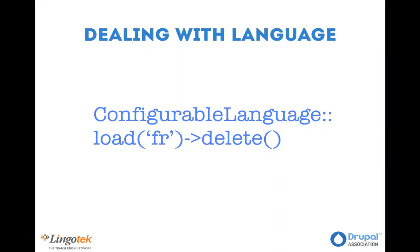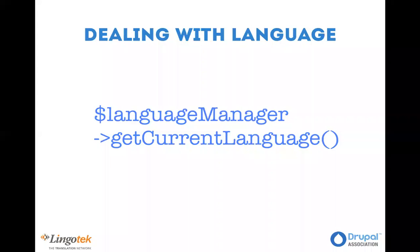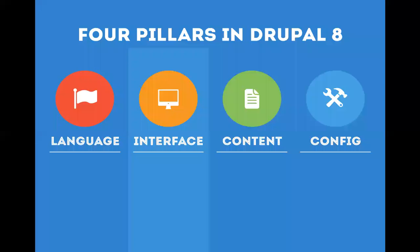If you want to use the language that was used for the current request, you go to the language manager, which lets you get the current language negotiated for the request. This runs through all the settings on the site — whether it uses browser settings for language detection, the domain, the path, or whatever — and gets you the language that should be used for this request based on those settings, so you can use this in your code to display data in the appropriate language.